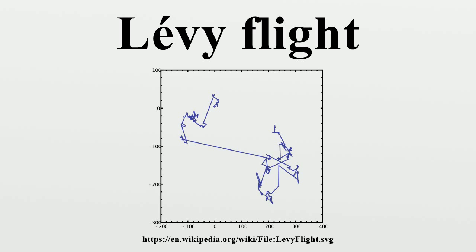He used the term Cauchy flight for the case where the distribution of step sizes is a Cauchy distribution, and Rayleigh flight for when the distribution is a normal distribution. Later researchers have extended the use of the term Lévy flight to include cases where the random walk takes place on a discrete grid rather than on a continuous space.